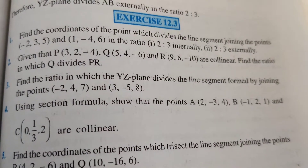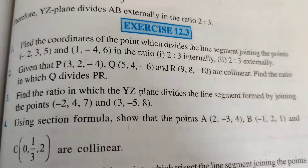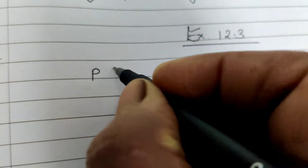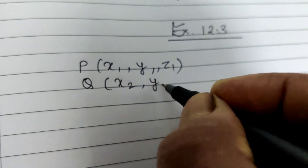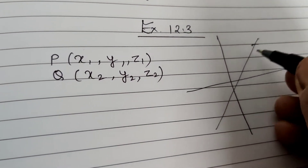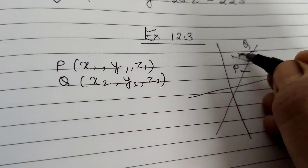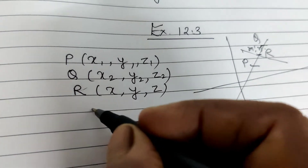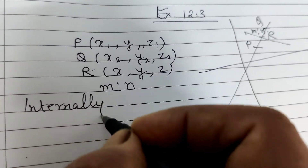Exercise 12.3 of the chapter Introduction to Three-Dimensional Geometry. This exercise is related to the section formula. If a line divides in the ratio m to n internally and externally, point P has coordinates x1, y1, z1 and point Q has coordinates x2, y2, z2. A line PQ in a three-dimensional plane is divided into two parts at point R in ratio m to n. The coordinates of point R are x, y, z.